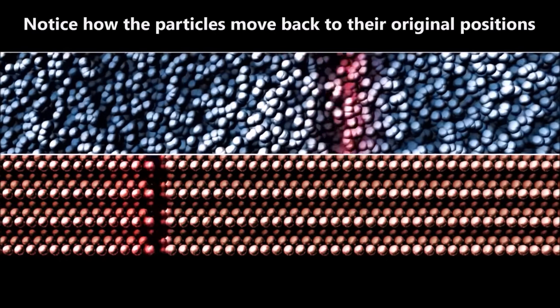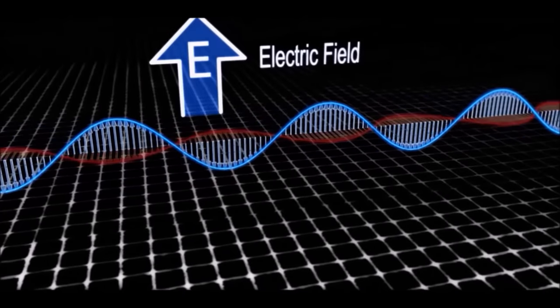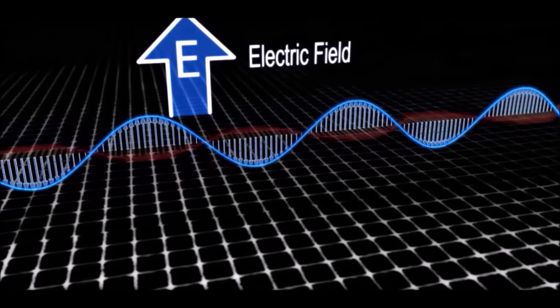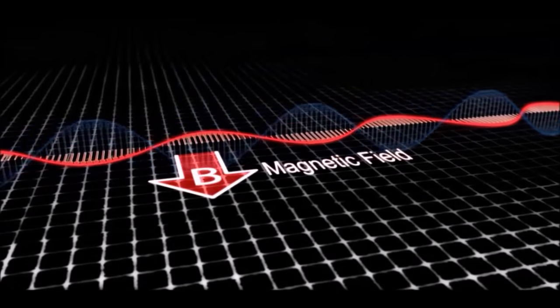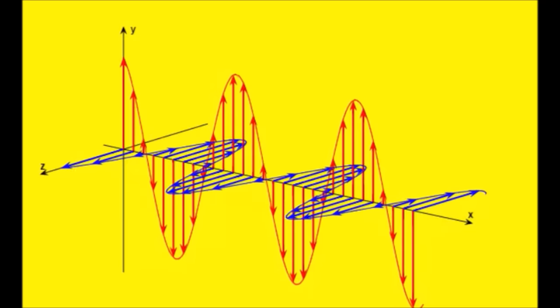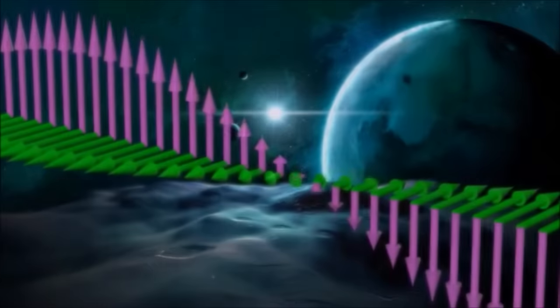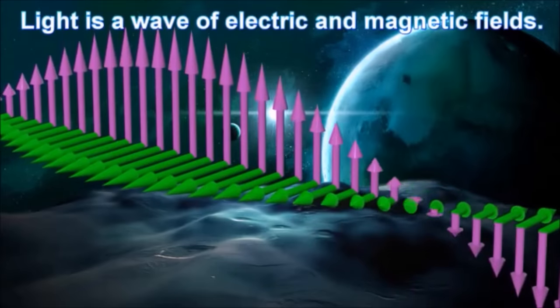So what happens when you take an electric charge and start to shake it back and forth, analogously to the way this boy is shaking the string? The electric field surrounding the charge will start to oscillate. As a result of this change in the electric field, an oscillating magnetic field will be generated, which in turn will create an oscillating electric field, and on and on it will go. The result is an electromagnetic wave. According to Maxwell's equations, the speed with which an electromagnetic wave travels is equal to the speed of light. This led him to conclude that light is a type of electromagnetic wave.